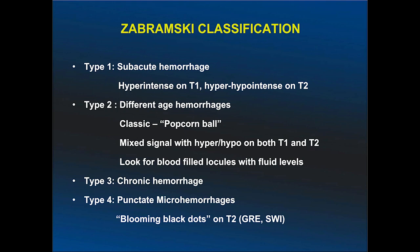Type 3 represents chronic hemorrhage. Type 4 consists of punctate micro-hemorrhages, previously described on T2 but now extended to GRE and susceptibility-weighted images with advanced imaging. This is the most challenging type to diagnose, as there are multiple differentials for this condition.